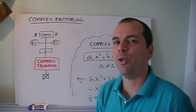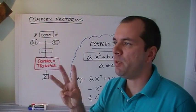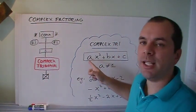So how do we deal with complex trinomials? What is a complex trinomial first? Well, trinomial means three terms, and complex means that the a value at the beginning is different than one.